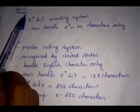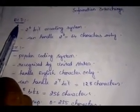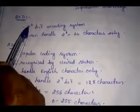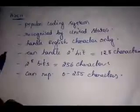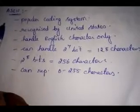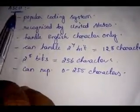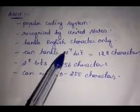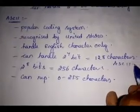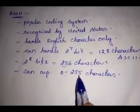The first encoding system is BCD. BCD stands for Binary Coded Decimal. This coding system is not in practice right now. It is a 2-power-6 bit encoding system, meaning it can handle only 64 characters. The next coding system is ASCII, which stands for American Standard Code for Information Interchange. It is the most popular encoding system, recognized by the United States. It can handle only English characters using 2-power-7 bits, that is 128 characters. Later, ASCII-8 was invented, which can represent 2-power-8 bits — that means 256 characters, from 0 to 255.